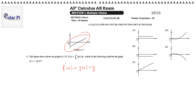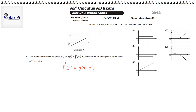We don't know what the derivative of f is exactly. But because f is a positively sloped straight line, we know that its derivative is going to be its slope. And therefore, f prime, which is g, is just going to be some m.